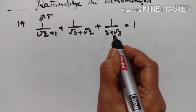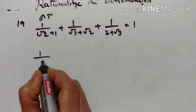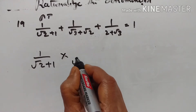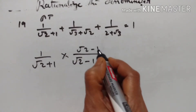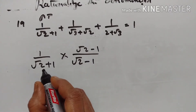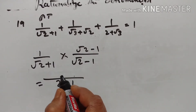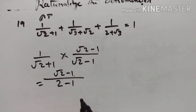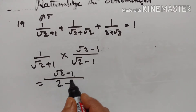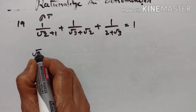We have to prove that the sum of all these 3 terms is equal to 1. Let us take the first term: 1 upon square root of 2 plus 1. Let us rationalize the denominator by multiplying by square root of 2 minus 1 over square root of 2 minus 1. Using a plus b into a minus b equals a squared minus b squared, the denominator becomes square root of 2 squared minus 1 squared, which is 2 minus 1 equals 1. The numerator is square root of 2 minus 1, so the value is equal to square root of 2 minus 1.